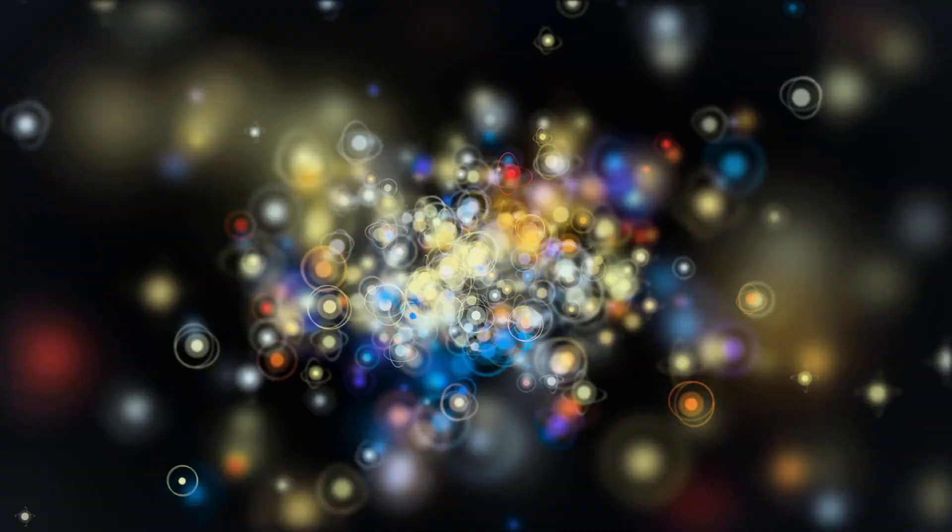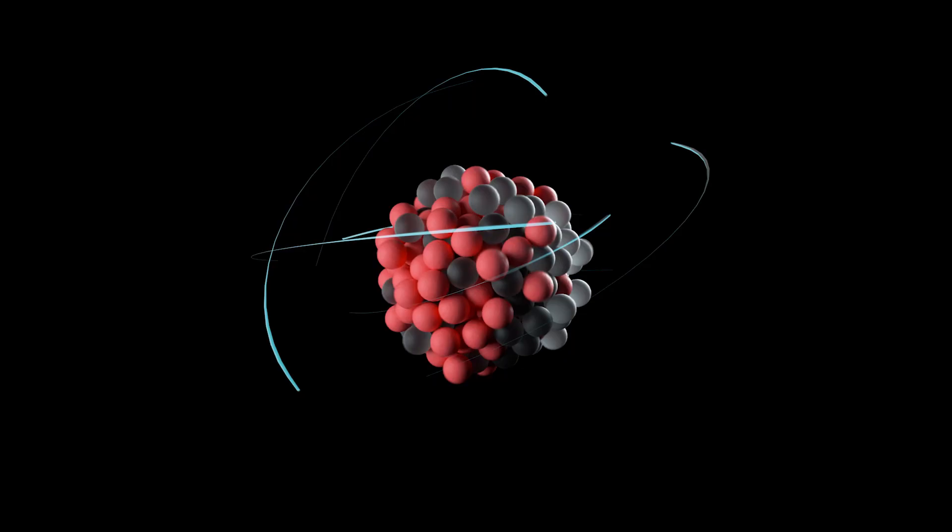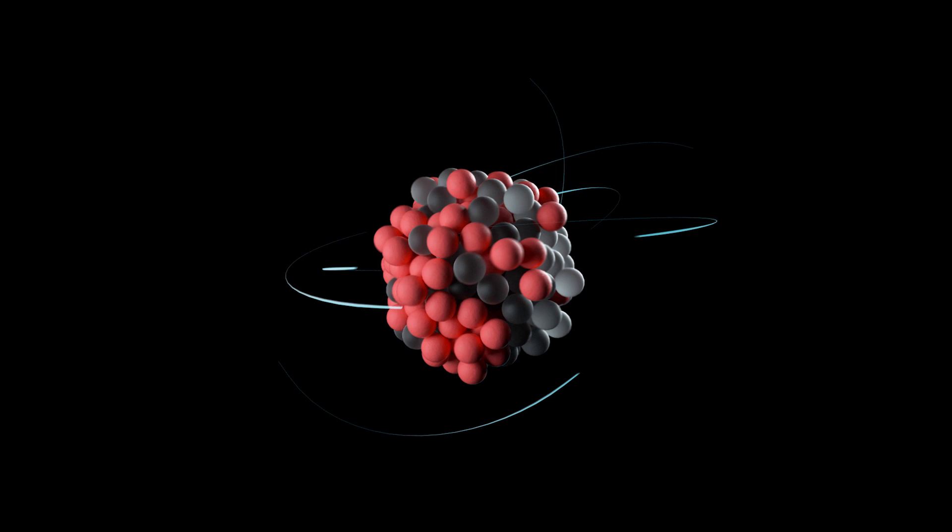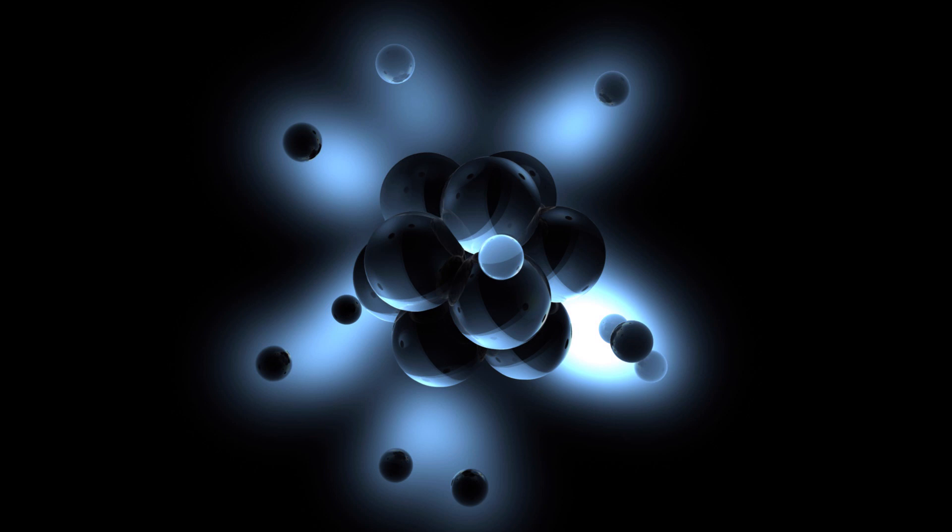Though common, the particles are nonetheless challenging to capture. Neutrinos scarcely interact with other types of matter since they have a little electrical charge and almost no mass. Neutrinos perceive ordinary stuff in the cosmos as incorporeal and move through it almost as quickly as light, hence earning them the nickname ghost particles.